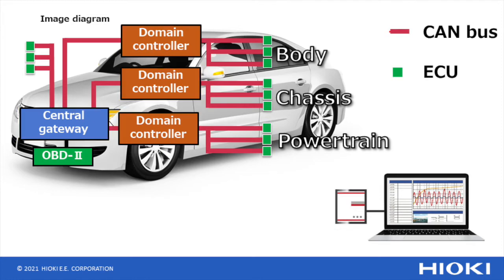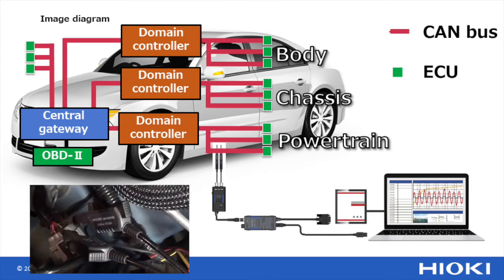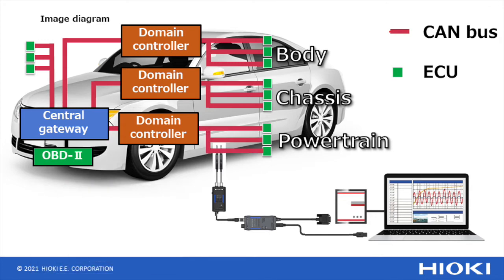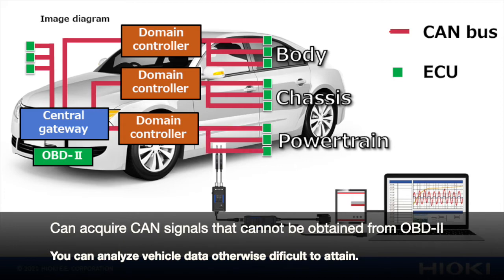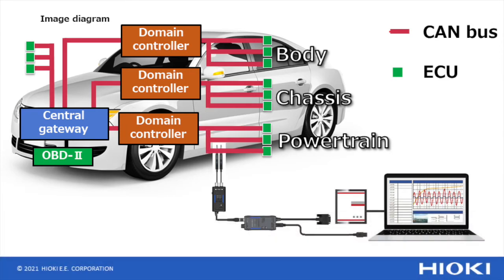However, with the non-contact CAN sensor, you can access all data on the CAN bus because you are able to get information directly from the bus, even from hard-to-reach places. For example, when evaluating the powertrain system, you can acquire all the signals from that area. This sensor allows you to bypass the OBD2 and access unfiltered and full CAN data.